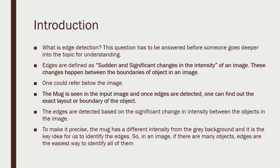What is edge detection? Edges are nothing but sudden and significant changes in the intensity of an image. These changes happen between the boundaries of objects in an image. The intensity change is what we are concerned about, and that intensity change at the boundaries is what edges are all about.